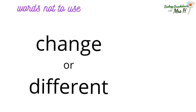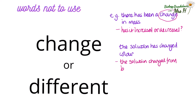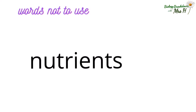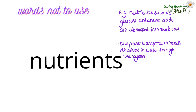In a similar situation, try not to write the words 'change' or 'different' without writing how whatever it is has changed. For example, 'there has been a change in mass' — well, has it increased or decreased? Or 'the solution has changed colour' — what colour did it change from and to? Was it from blue to orange? So be specific; don't use the word 'change' or 'different.' If you write the word 'nutrient,' make sure you give the name of the specific nutrient required. For example, nutrients such as glucose and amino acids are absorbed into the blood, or the plant transports minerals and water from the roots to the rest of the plant through the xylem. Don't ever leave the word 'nutrient' without naming a specific one.